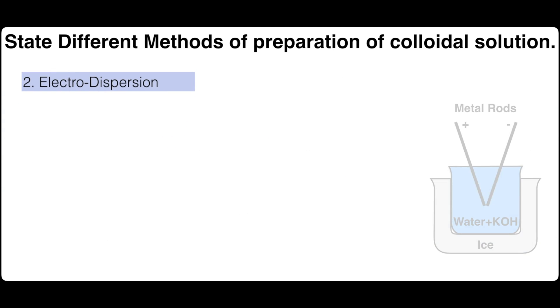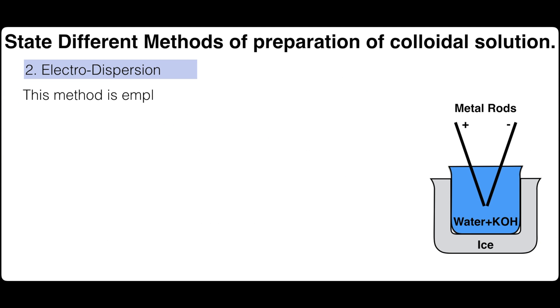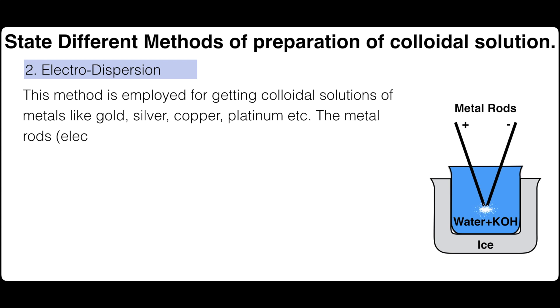Second, electro dispersion. This method is employed for getting colloidal solutions of metals like gold, silver, copper, platinum, etc.